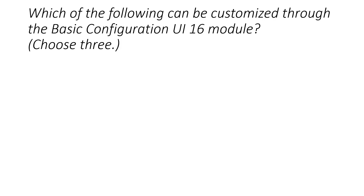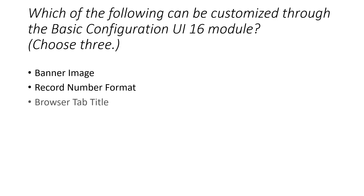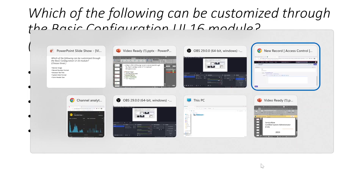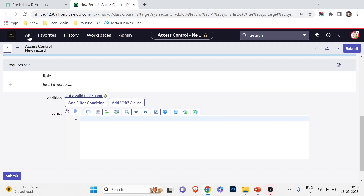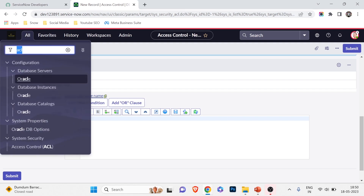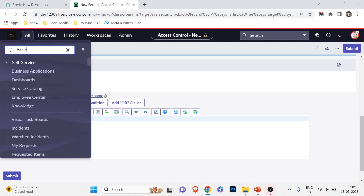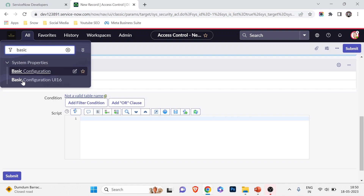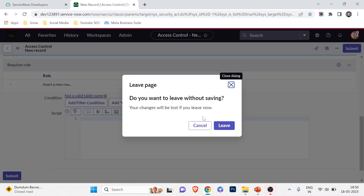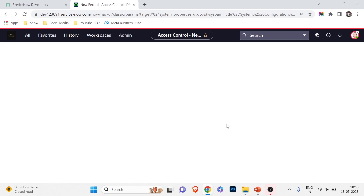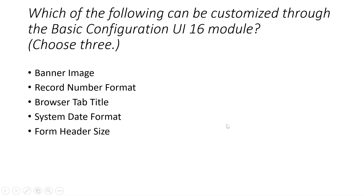Which of the following can be customized through the Basic Configuration UI 16 module? Let's see the options. If you click on All and type 'basic configuration' you get the Basic Configuration UI 16 module. It is asking what things you can change there.